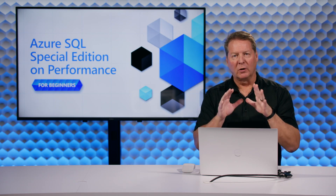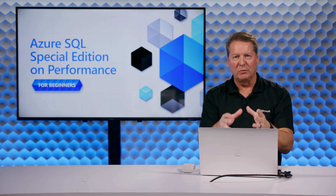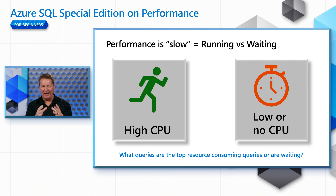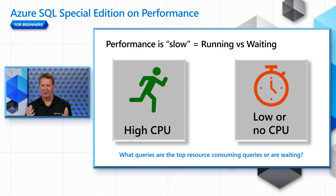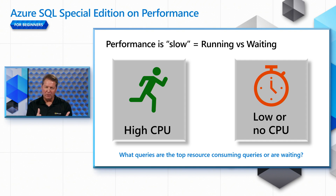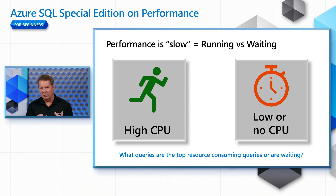One thing you're going to see consistently through this series is a technique on how to attack a performance problem for SQL. A long time ago when I was in support, one of my colleagues, Keith Elmore, was a deep expert. Keith and I were talking about how to teach customers to attack performance problems in a better, more efficient way. Keith came up with this concept: if it's slow from a customer perspective, it's either running or waiting — running being a symptom of a high CPU problem, and waiting being a symptom of a low or no CPU problem.